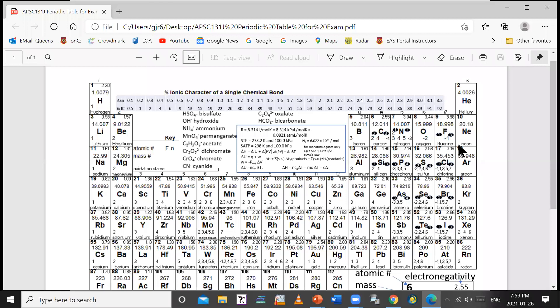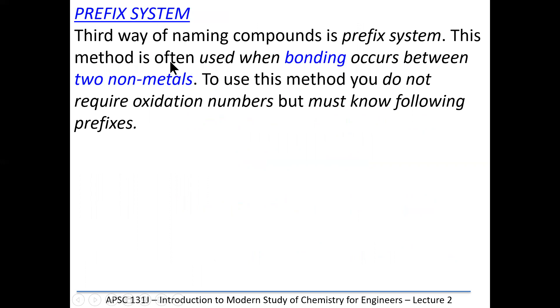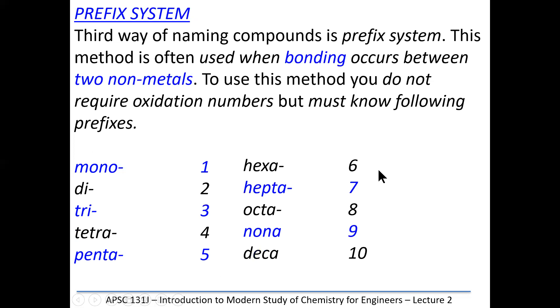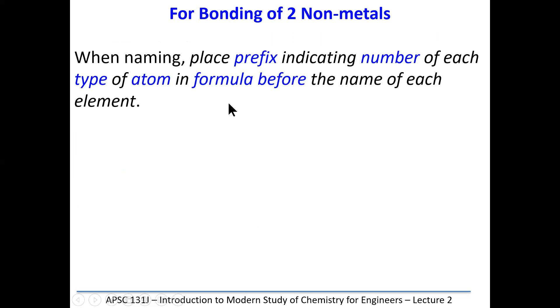A prefix system is used for two nonmetals. Nonmetals are this small group — like sulfur and oxygen, carbon and oxygen. You might be familiar with carbon monoxide, carbon dioxide, sulfur monoxide, sulfur dioxide, sulfur trioxide — those use a prefix system. Two nonmetals bonded together usually form covalent bonds. The prefixes are: mono (1), di (2), tri (3), tetra (4), penta (5), hexa (6), hepta (7), octa (8). In some cases the prefix is dropped — for CO, we don't say 'monocarbon monoxide'; we say 'carbon monoxide'. If the first element's prefix would be 'mono', it's dropped.